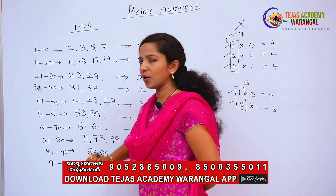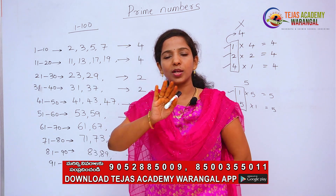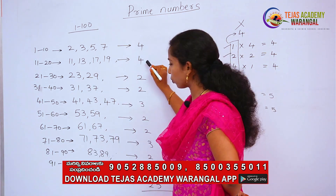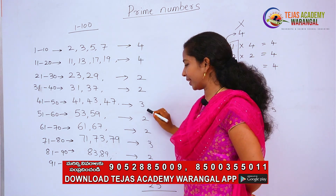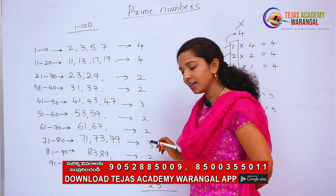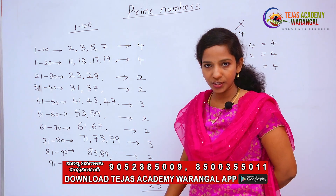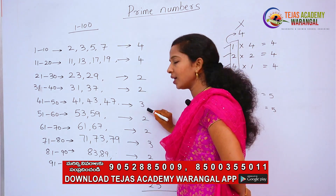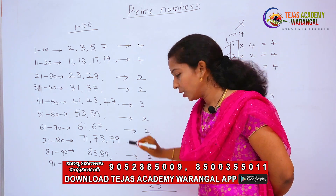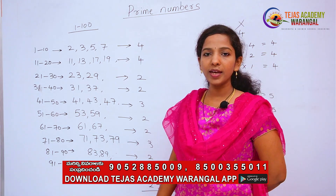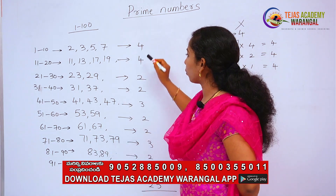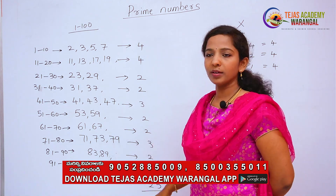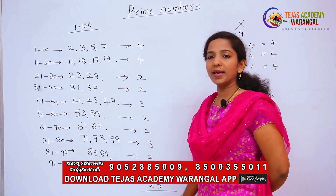The pattern to remember the count is: 4, 4, 2, 2, 3, 2, 2, 3, 2, 1. So in total there are 25 prime numbers between 1 and 100. For example, when you look at 60 to 70, there are only 2 prime numbers — sixty-one and sixty-seven. Don't get confused with 63, 65, or 69, which are not prime.